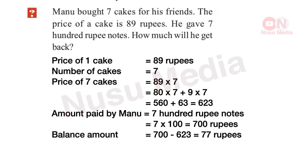The price of 7 cakes is 623 rupees. The amount paid is 700 rupees. 700 minus 623 is equal to 77 rupees. That is the balance.